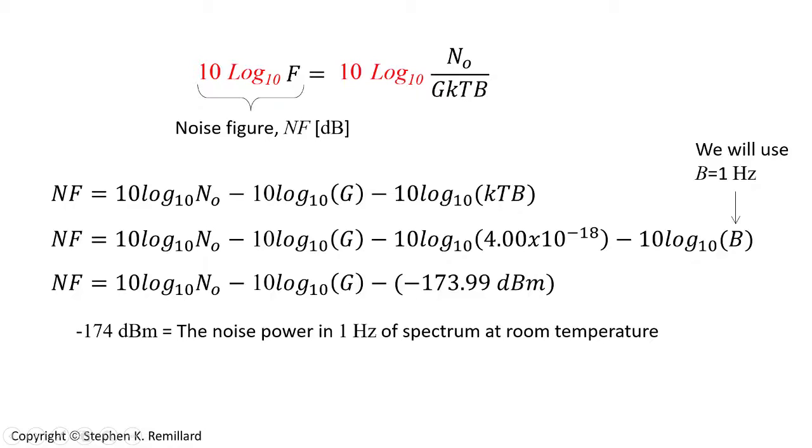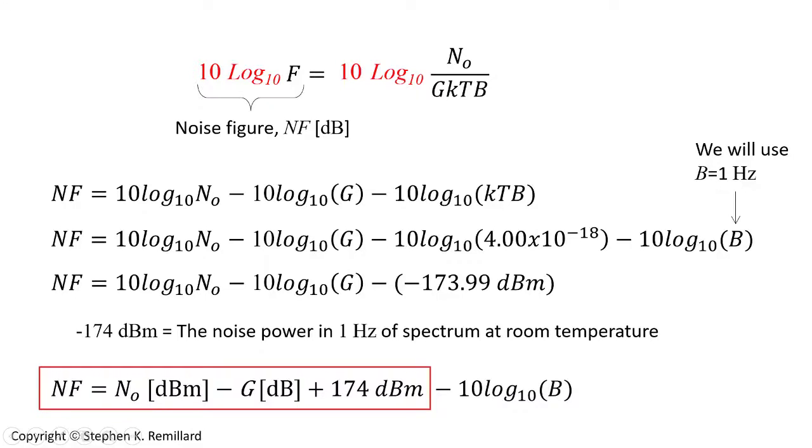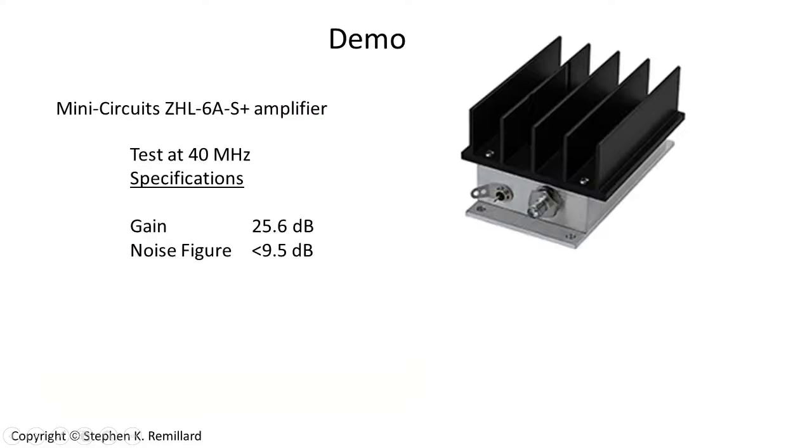The noise figure is the output noise in decibels, that's 10 log base 10 of the output noise, minus the gain in decibels, plus 174 dBm. And in the event that you can't set B to 1 Hertz in your spectrum analyzer you need to include this last term.